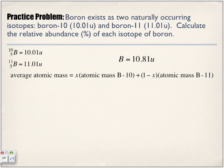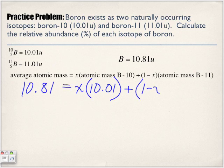Be careful with the algebra. Let's start here. So average atomic mass, what is it? 10.81 equals x times the atomic mass of B-10, which is 10.01, plus 1 minus x times the atomic mass of B-11, which is 11.01.